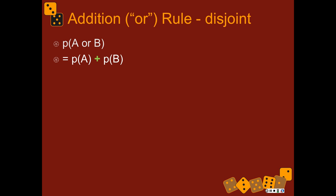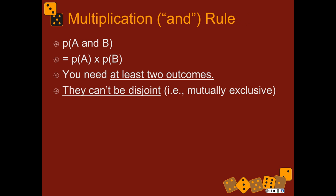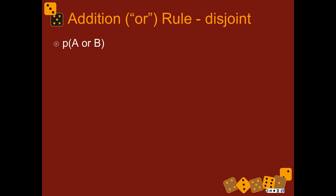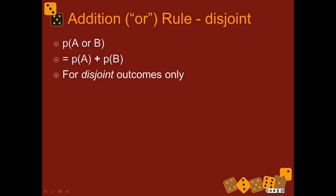So the probability of A or B — that is the OR rule, not AND. AND is multiply, OR is add. The probability of A or B happening is the probability of A plus the probability of B. This form of the rule only works for disjoint outcomes. For example, rolling one die — what's the probability of getting a 1 or a 4? The probability of getting a 1 is 1 over 6, and the probability of getting a 4 is 1 over 6. So the probability of getting a 1 or a 4 is 2 over 6 — which is 1 third.